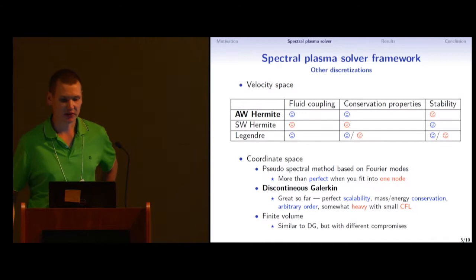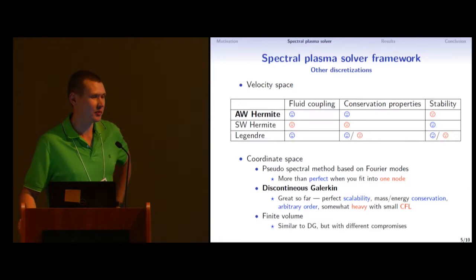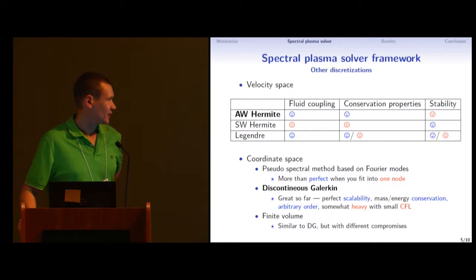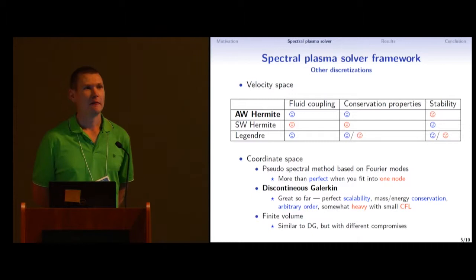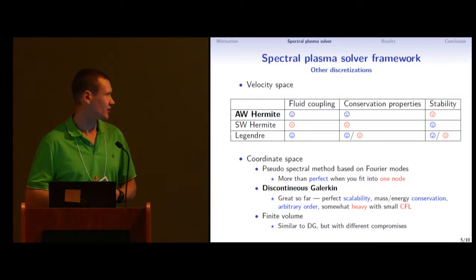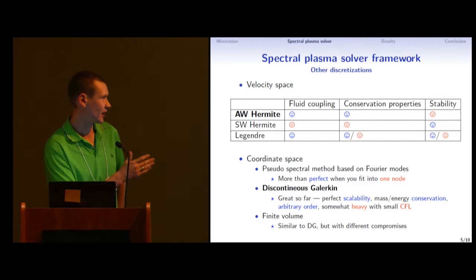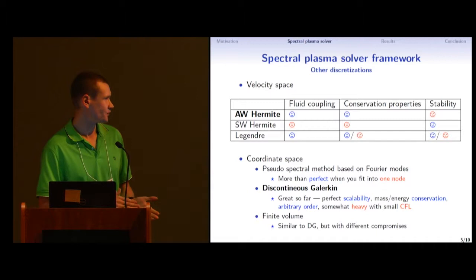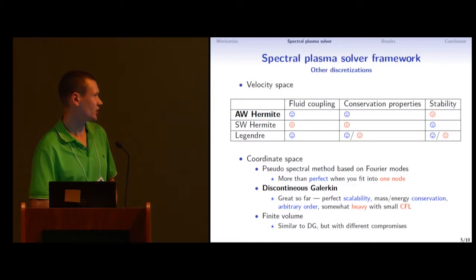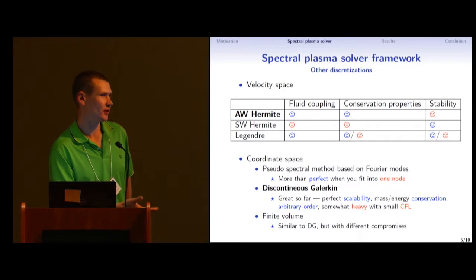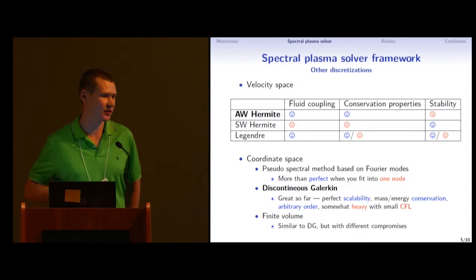For coordinate space, we also experimented with different approaches. Probably the first one was pseudo-spectral method based on Fourier methods. This is a nice method, very accurate, and very nice conservation properties and so on. However, it has global nature and it doesn't scale very well. So if it's on one node, it's perfect. You go farther and farther, it becomes worse and worse. So for medium-sized problems, small problems, it's very good. But for now, we stay with discontinuous Galerkin, which was great so far. It scales well, has conservation properties and arbitrary order. There are some limitations maybe with comparison to finite volume. It's maybe somewhat heavy, but it scales well. And maybe restrictive CFL condition if you increase order too much. However, for implicit method, it doesn't really matter.